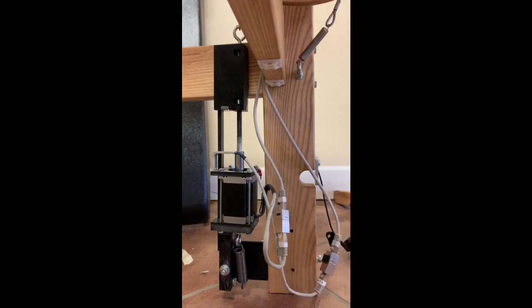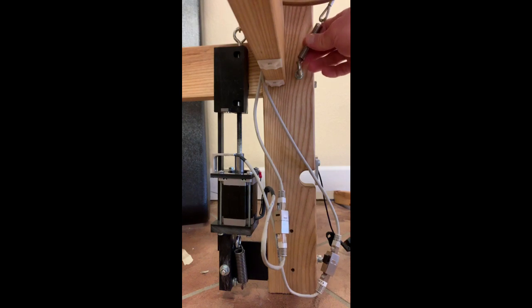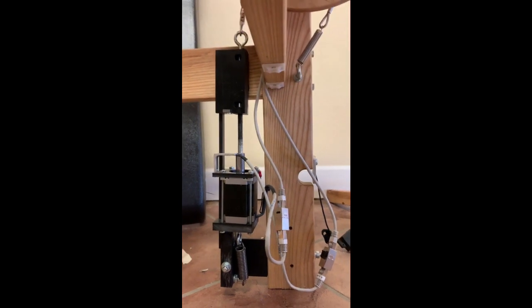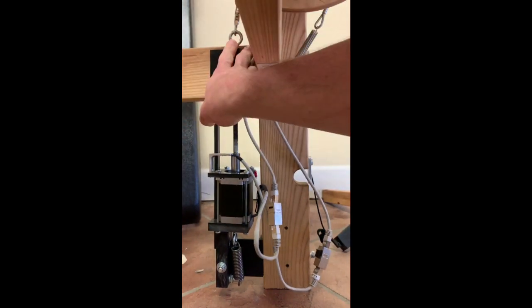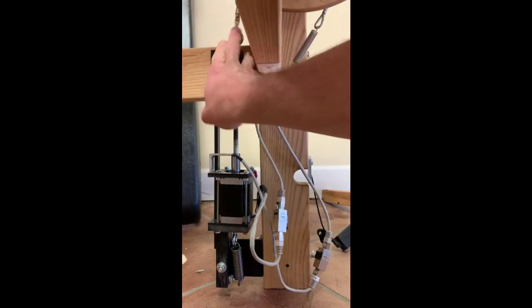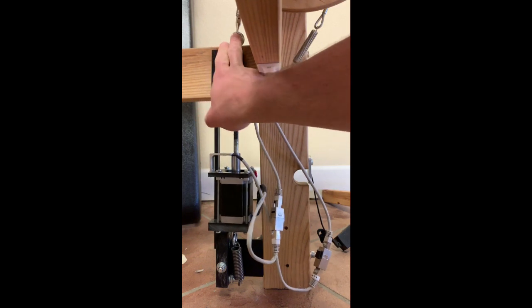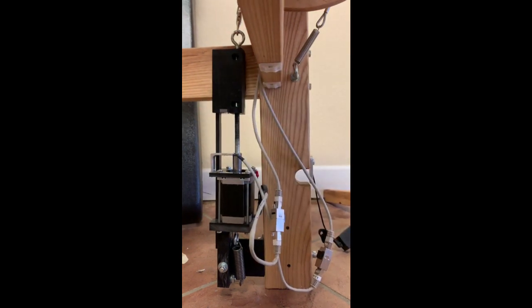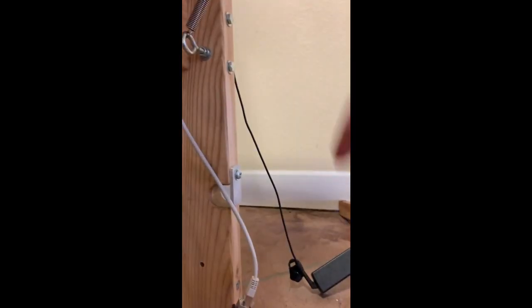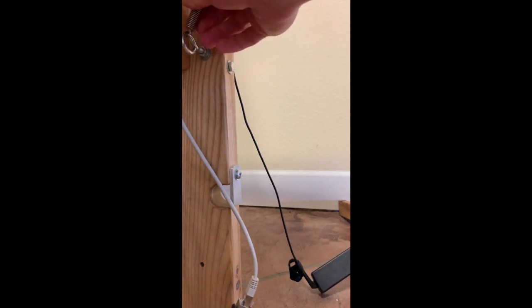One thing to point out is that these hooks on the cable are meant to be in the upper position here. So here you can see that hook, and then also this spring is attached here. If this falls down below, it's going to make your cable feel a little tight because it basically engages that spring.